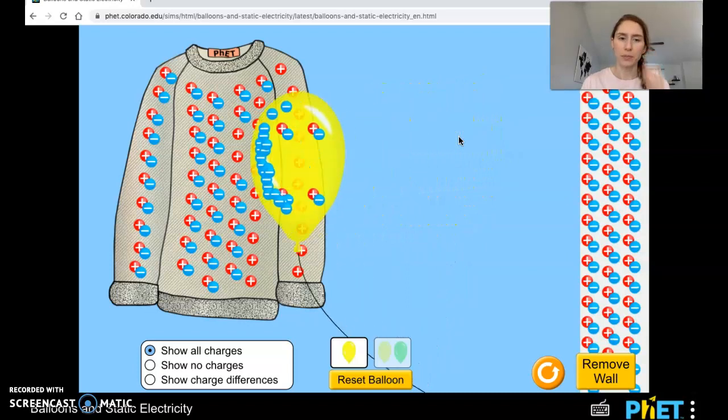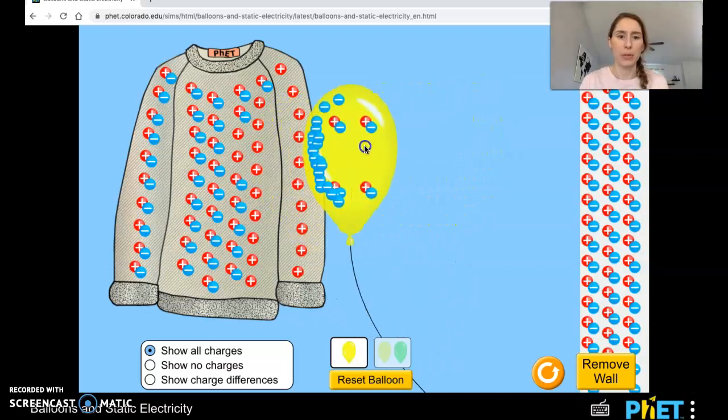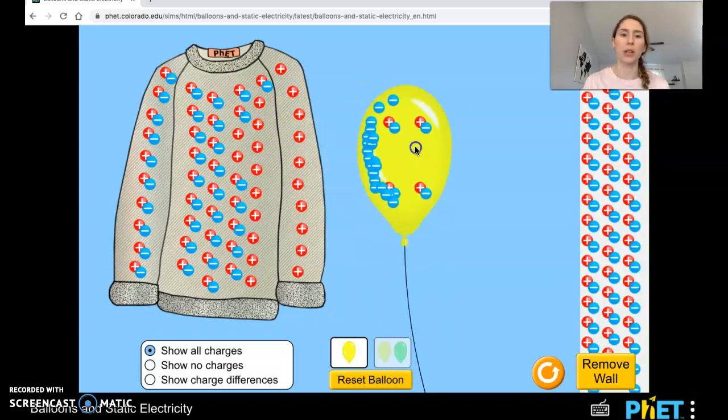I'm gonna let the balloon go now. So I'm going to separate them so you can see what happened. As I rubbed the balloon along the sweater, negative charges, electrons, transferred from the sweater to the balloon. That means that the balloon now has an overall negative charge. It's a negatively charged object because it's gained more electrons.